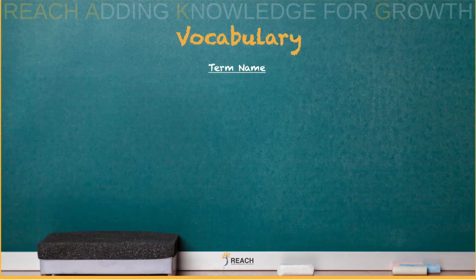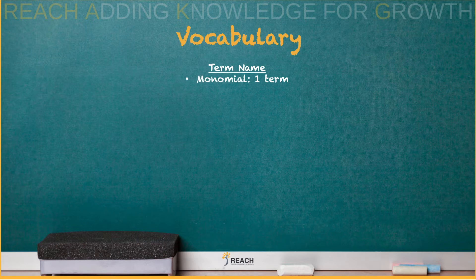The next vocabulary, term name. What do we mean by term name? So monomial, the prefix mono means one. That's an example, X, that's just one term. There are several examples, that's just one example.